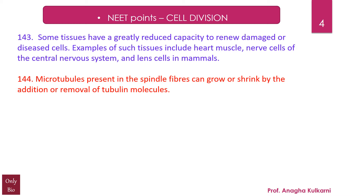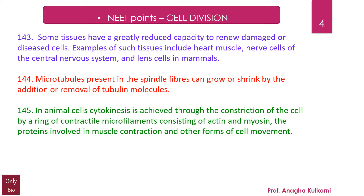Microtubules present in the spindle fibers can grow or shrink by the addition or removal of tubulin molecules. In animal cells, cytokinesis is achieved through the constriction of the cell by a ring of contractile microfilaments consisting of actin and myosin — the proteins involved in muscle contraction and other forms of cell movement.